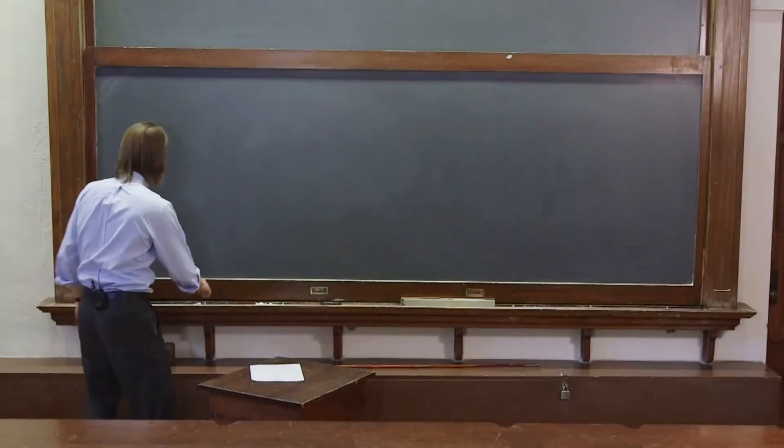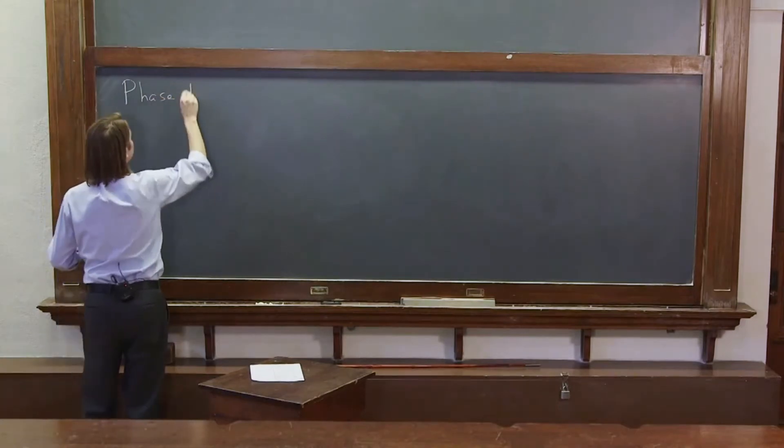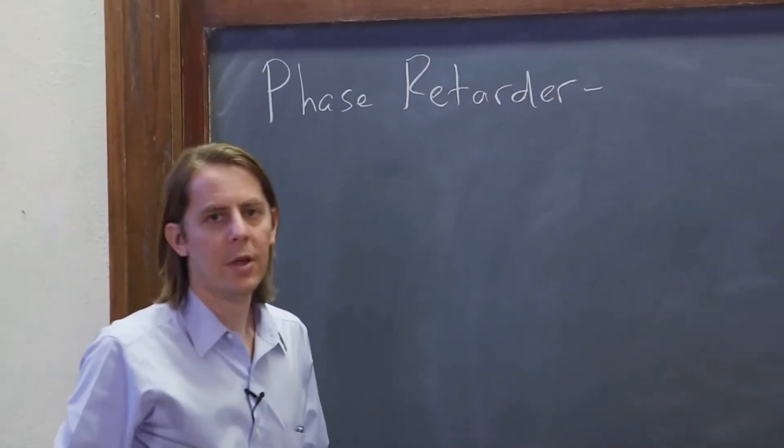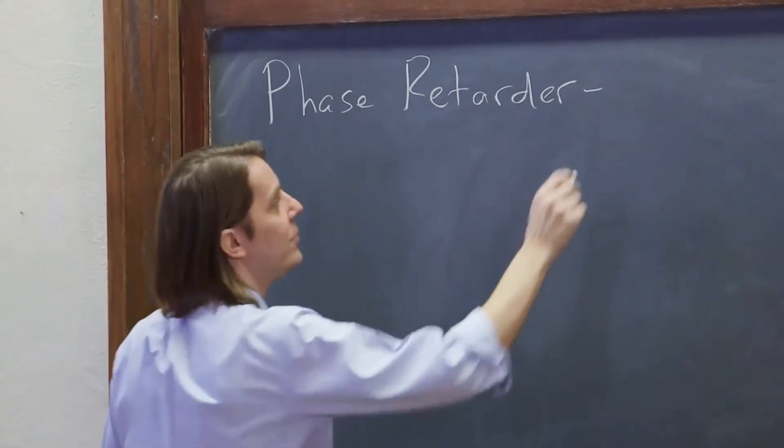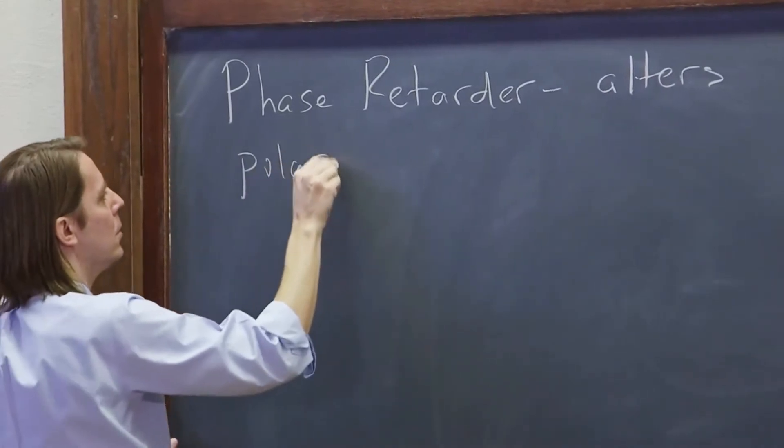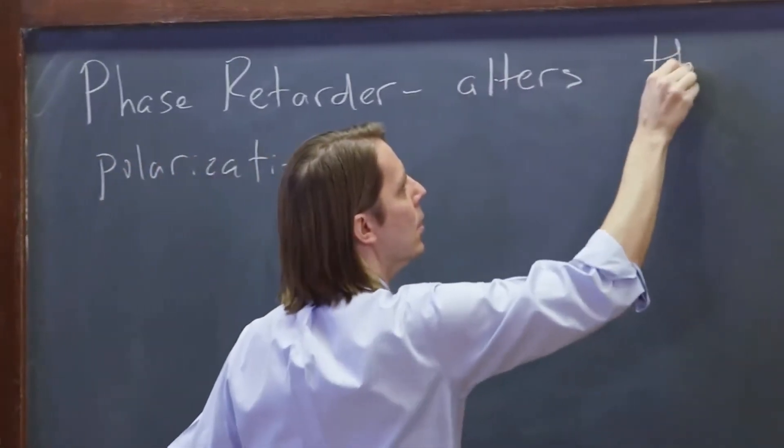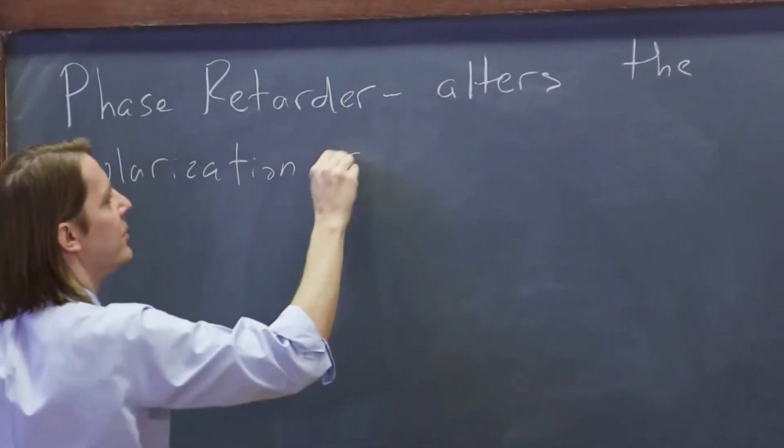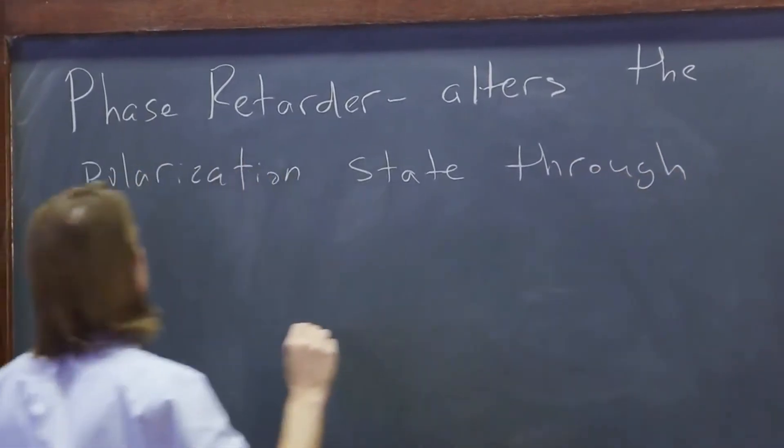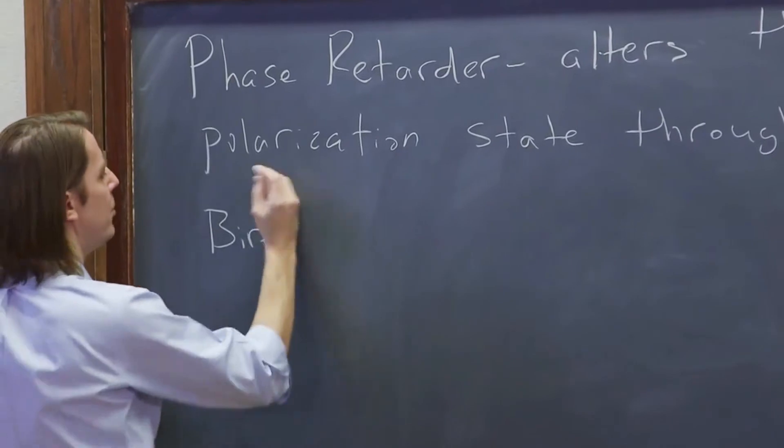Let's talk about another device that affects polarization, the phase retarder. This device alters the polarization state through birefringence.